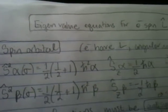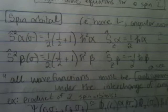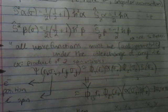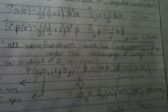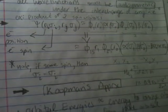So quick recap. Eigenvalue equations for electron spin angular momentum, just know these. All wave functions must be anti-symmetric under the interchange of any two electrons. Use this Slater determinant to find that.